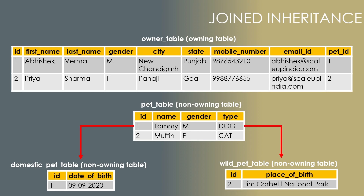The advantages of joined inheritance are: first, just as in classes you have one parent class and two child classes, in tables you also have one parent table and two child tables — it mirrors the class hierarchy and is easy to understand. Second, you don't need any extra column like 'category' because we have separate tables, so there is no need to discriminate between child types. Third, there are no null values.